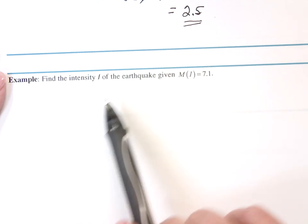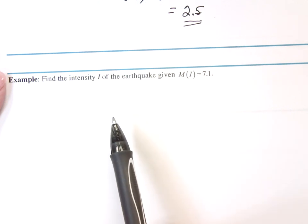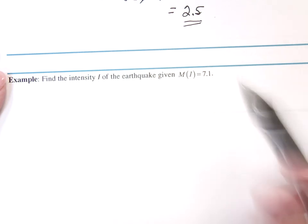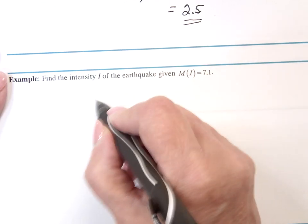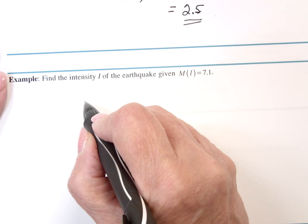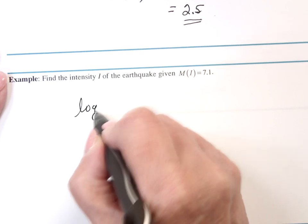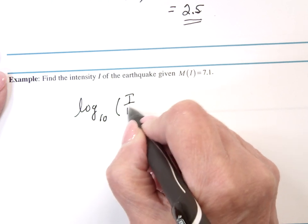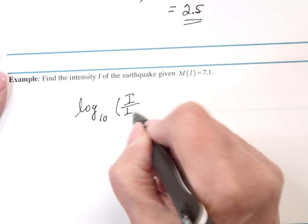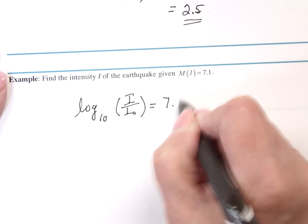It says, find the intensity I of the earthquake given at M sub I is 7.1. So this says that the M sub I, the log base 10 of I over I sub zero, is 7.1.